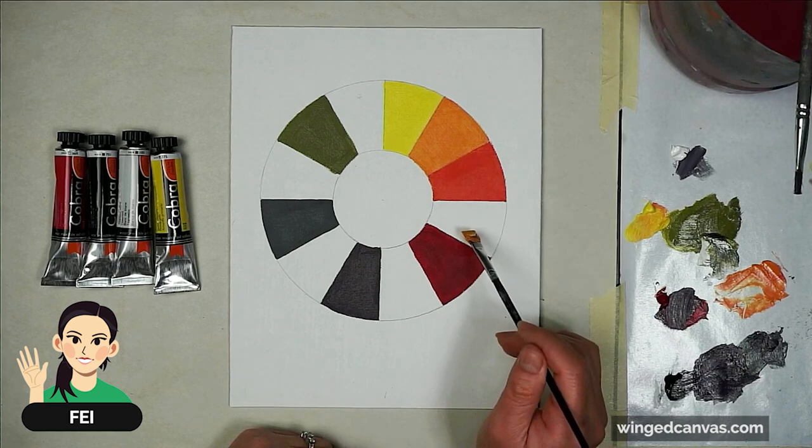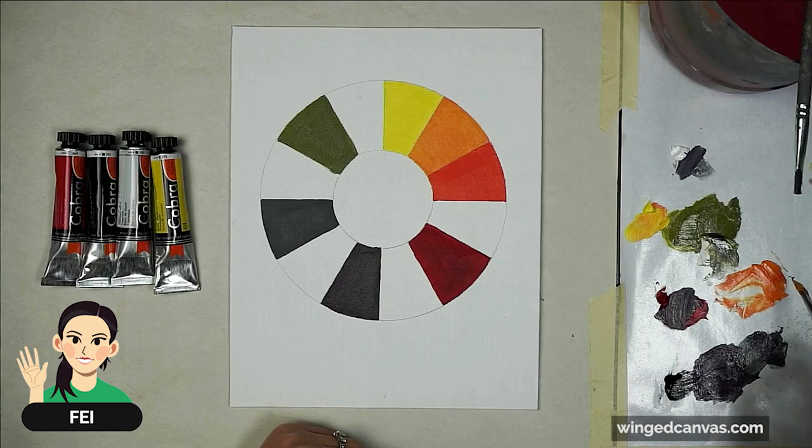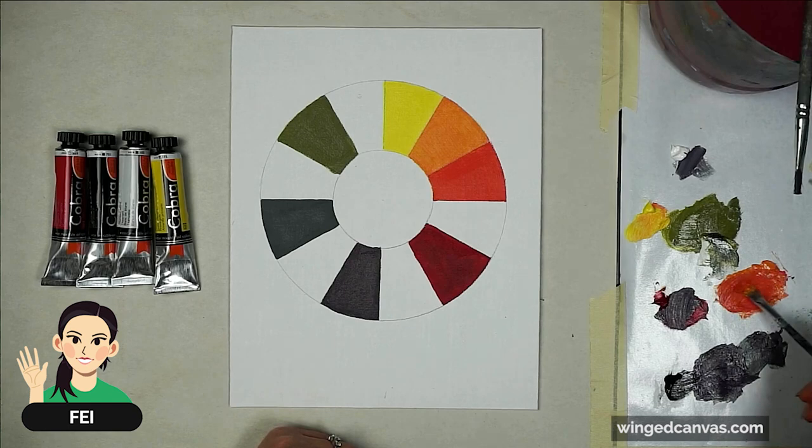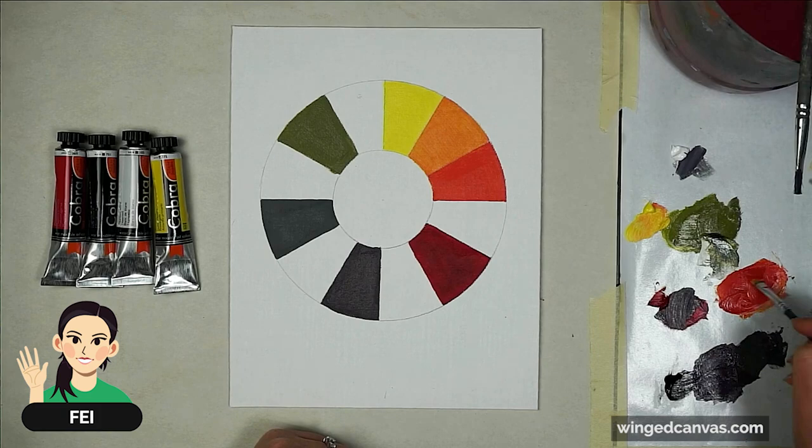The next color I'm going to mix is my red orange. To do that, I already have some of this orange and I'm going to mix in some of this red. You can see that the green looks very green next to my red. Color is very relative, which means if I want something to look green or more green, I just put red next to it.